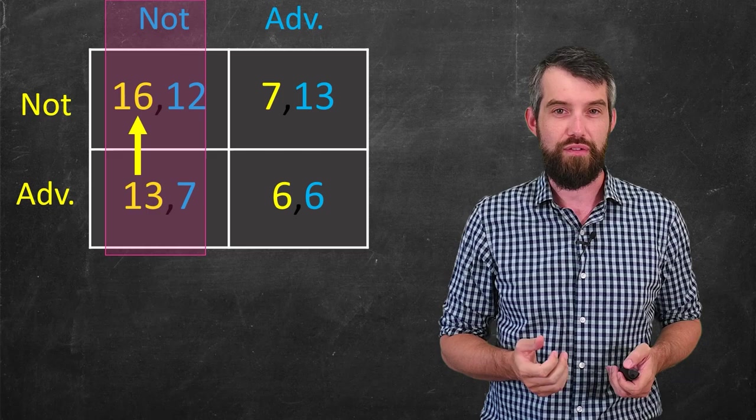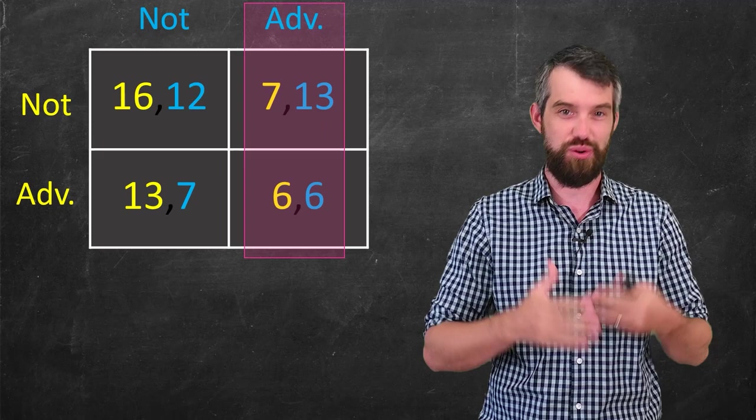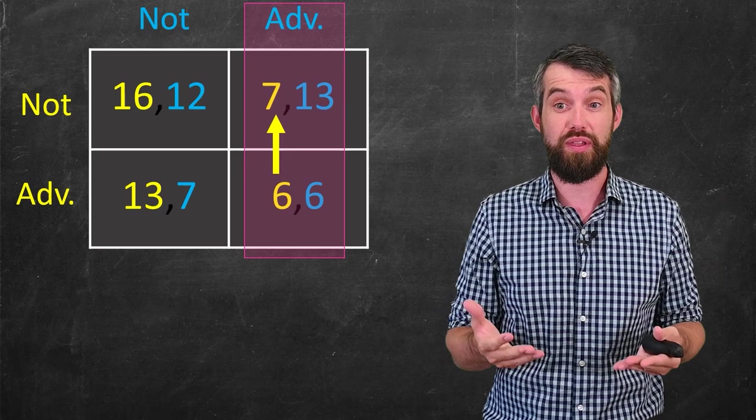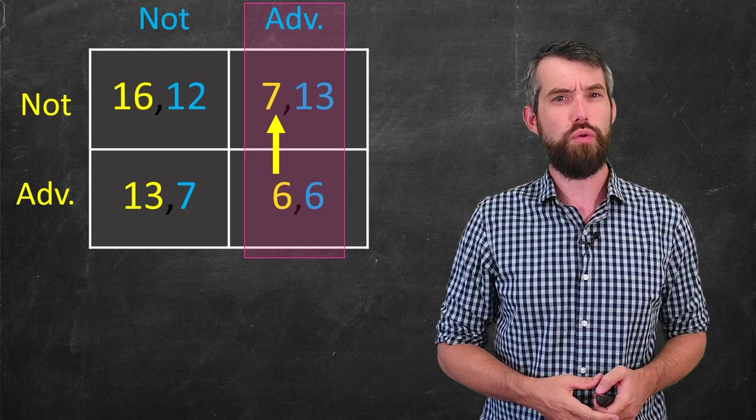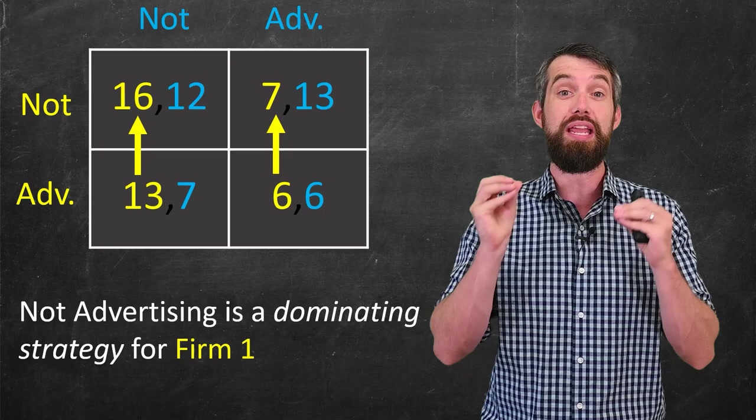However, if firm two instead had advertised, if they told us that we were advertising, we're thinking from the perspective of firm one, well, it's the same basic story. Seven is bigger than six. They should not advertise. So basically, the arrows go the same way.